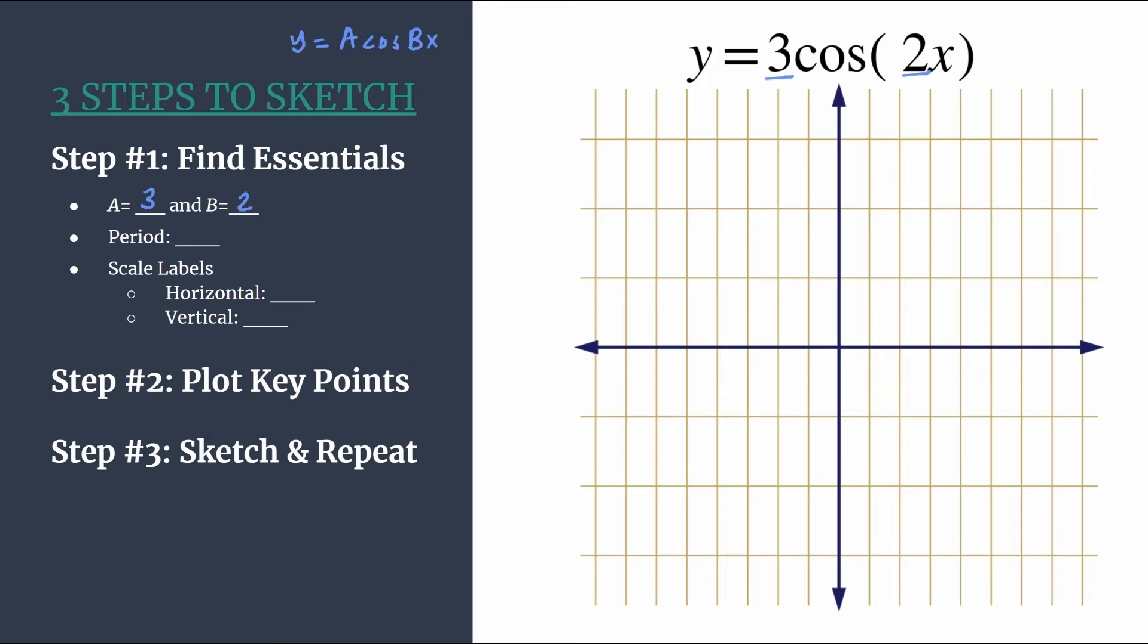And it also helps us find our period. So to find the period of cosine you simply calculate 2 pi divided by b. So 2 pi divided by 2, our period is pi. And remember pi is just the horizontal length of a cycle.